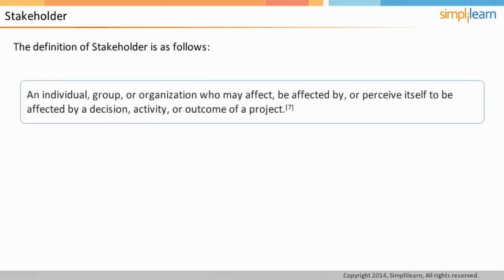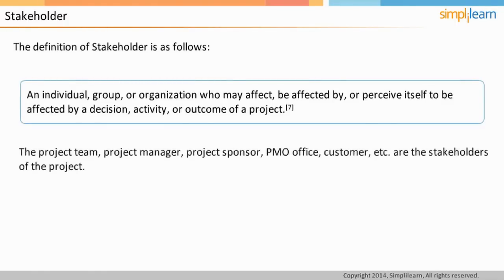A stakeholder can be defined as the one whose interests may positively or negatively be affected or perceived to be affected by the decision, activity, or outcome of the project. As per the definition, the project team, project manager, project sponsor, PMO office, customer, etc. are the stakeholders of the project.